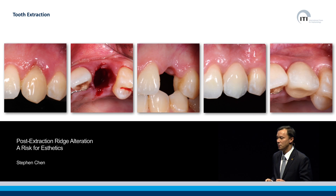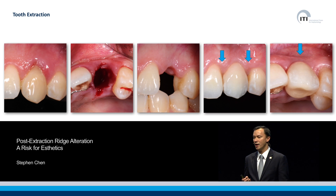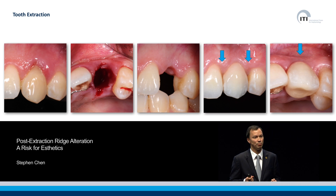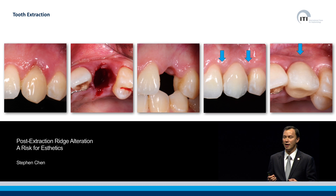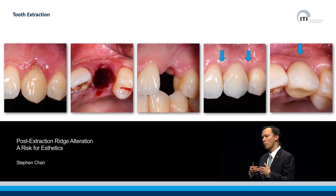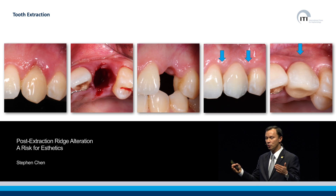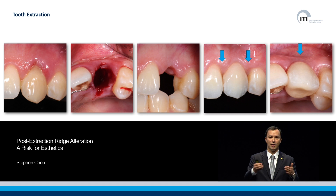As you can see from the final restoration, in this particular case of an upper canine tooth, we have certain soft tissue changes that have taken place at the tooth-to-implant papilla, as well as to the facial contour of the final restoration and its housing in the bone.